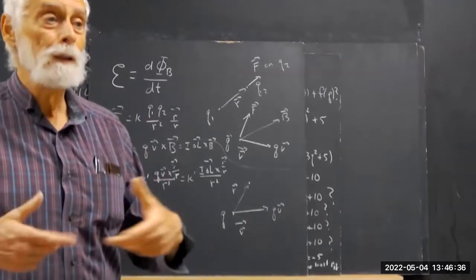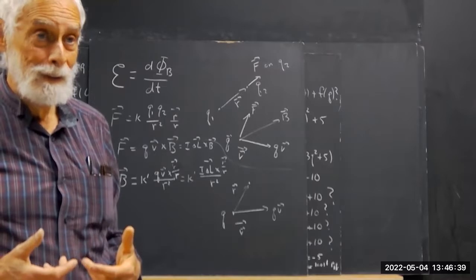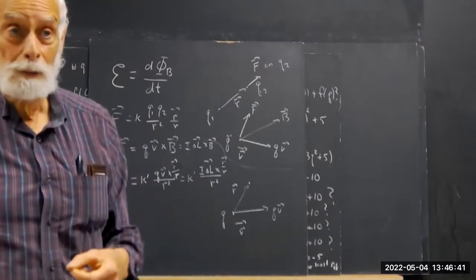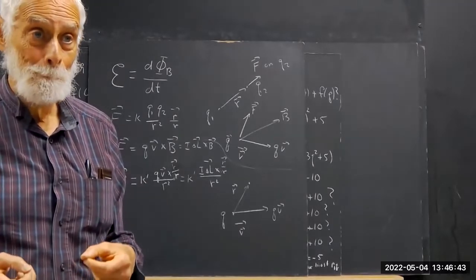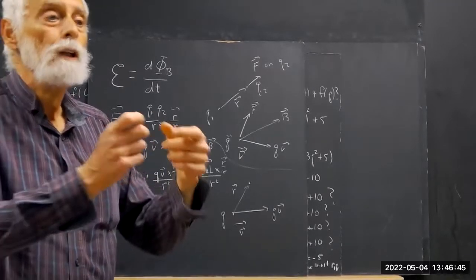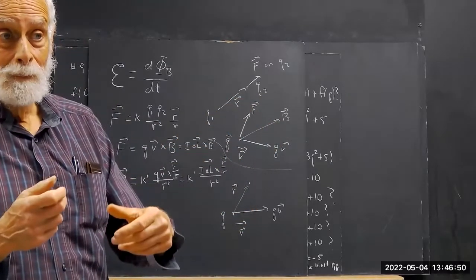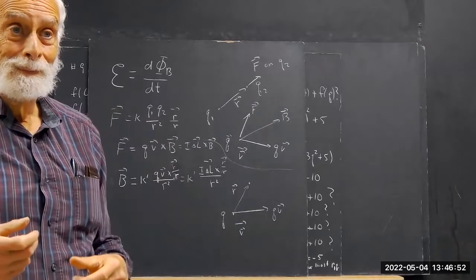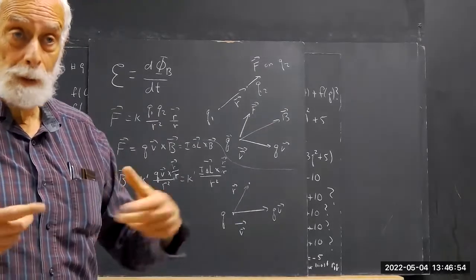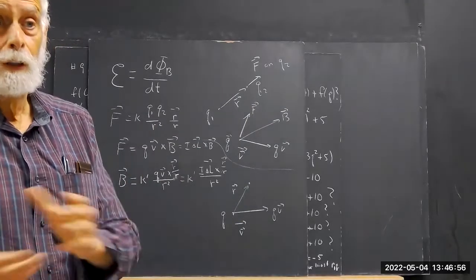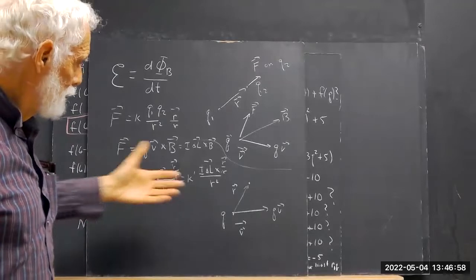Now, the EMF doesn't do anything if you don't have a complete circuit. But if you complete the circuit by hooking the ends of the coil to the ammeter, you've got to get a measured circuit, a measured current, because of all the other stuff.